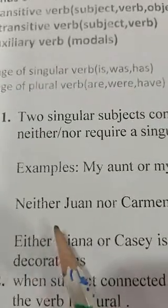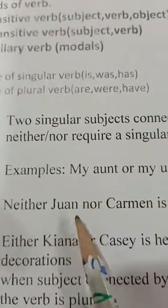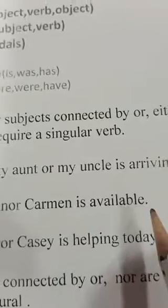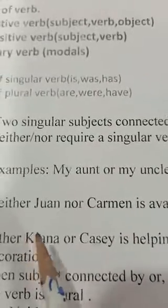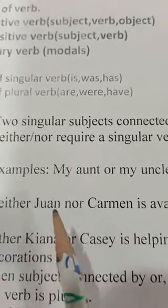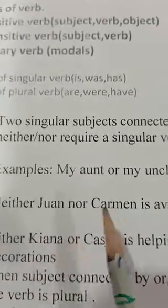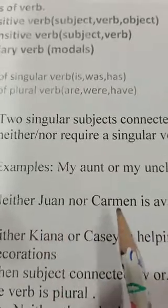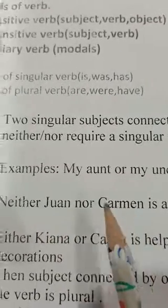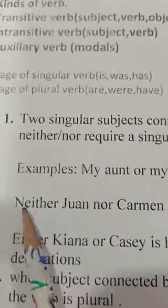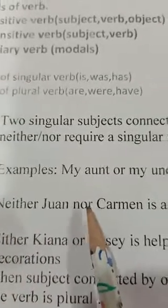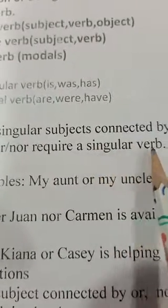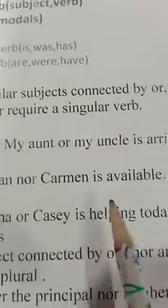Look at another example: 'Neither Joan nor Carmen is available.' Here again, Joan and Carmen are two singular subjects connected by 'neither nor', so the singular verb 'is' is used.